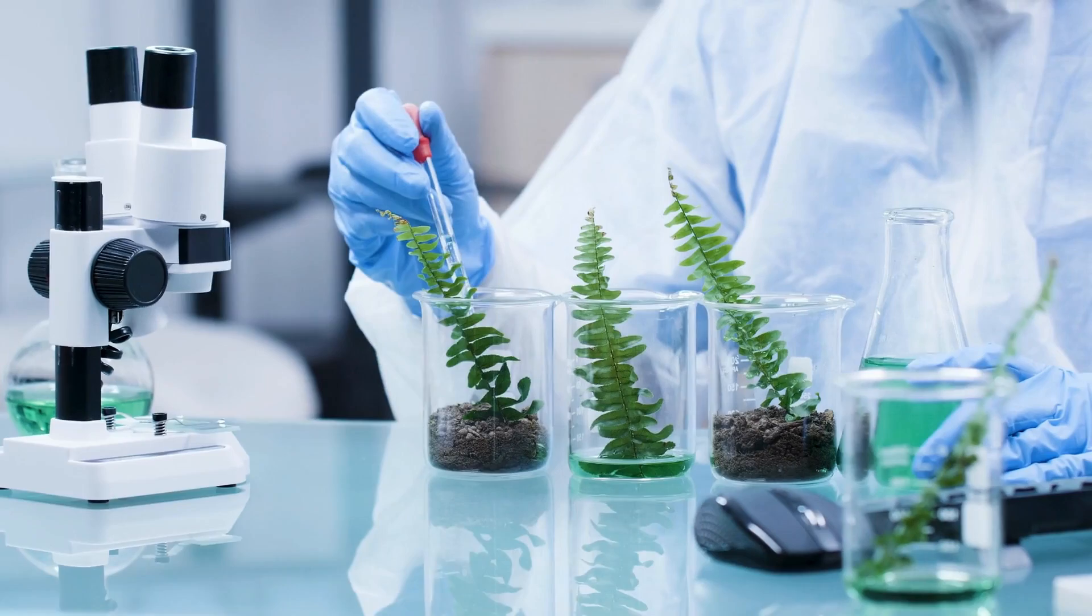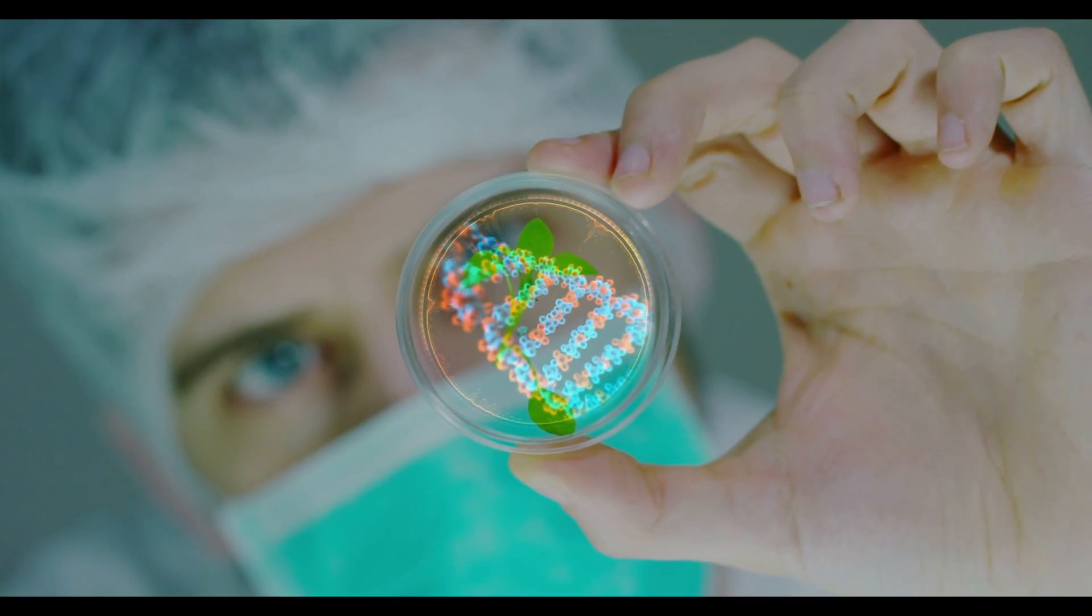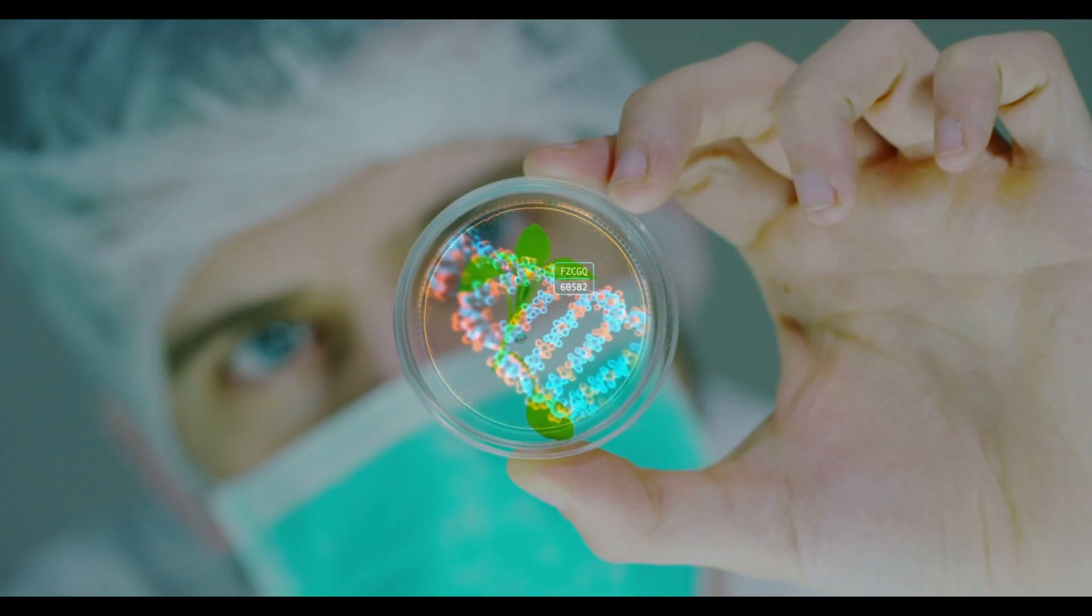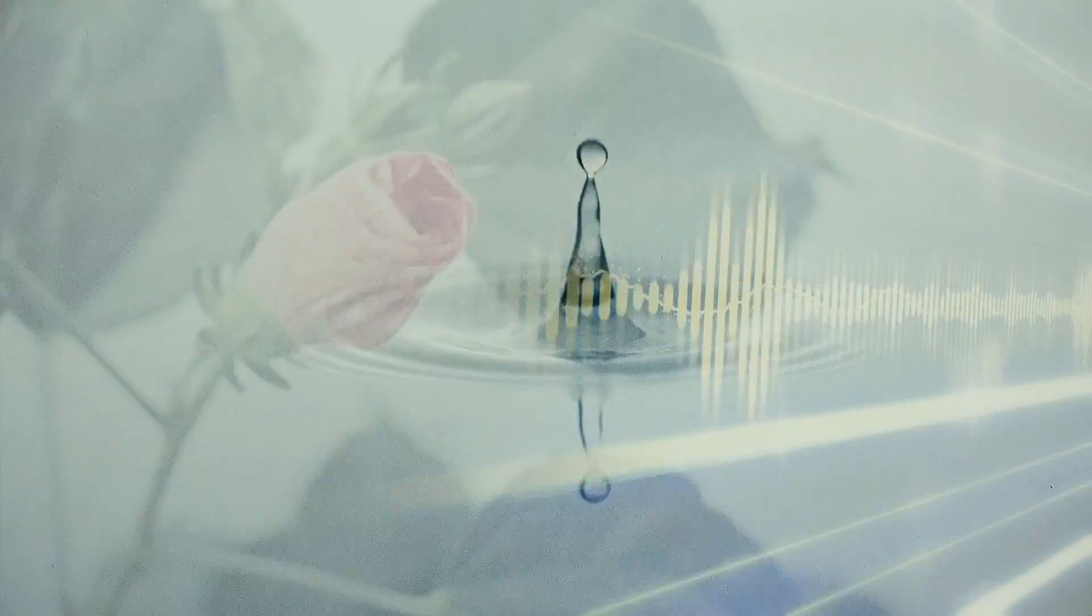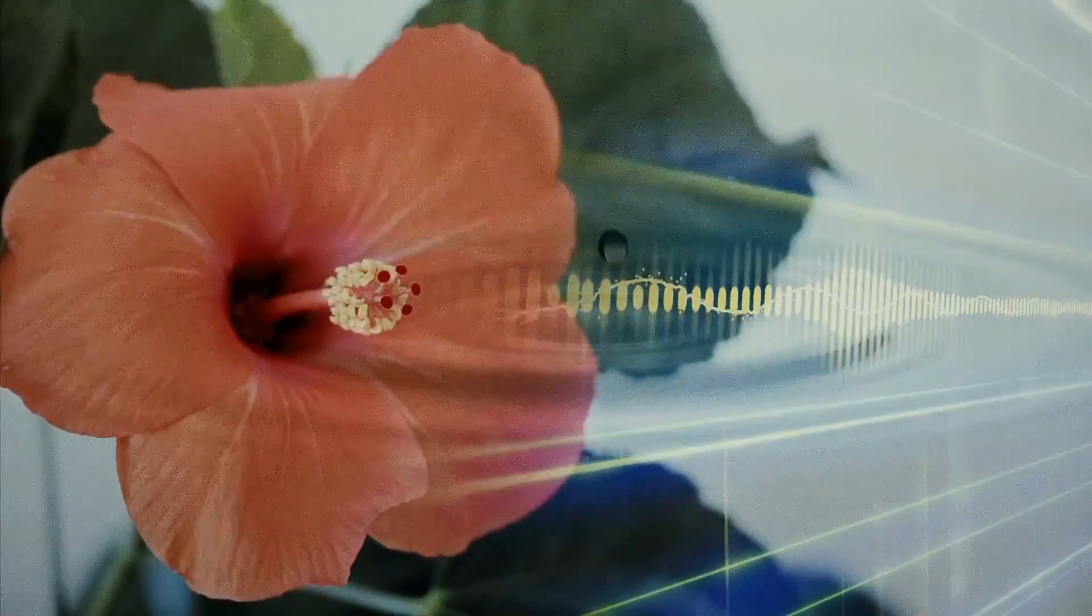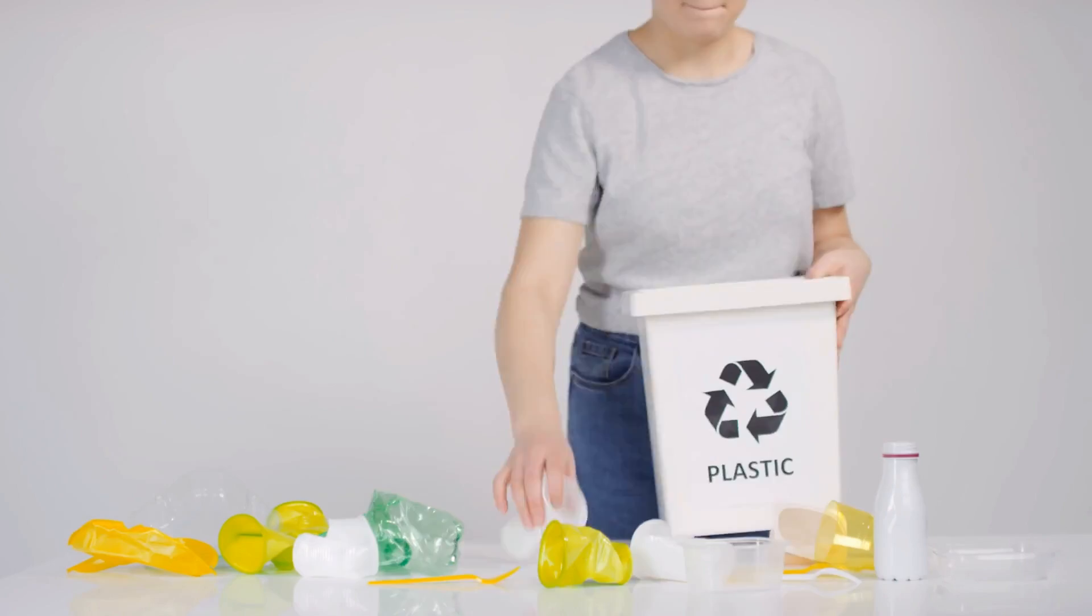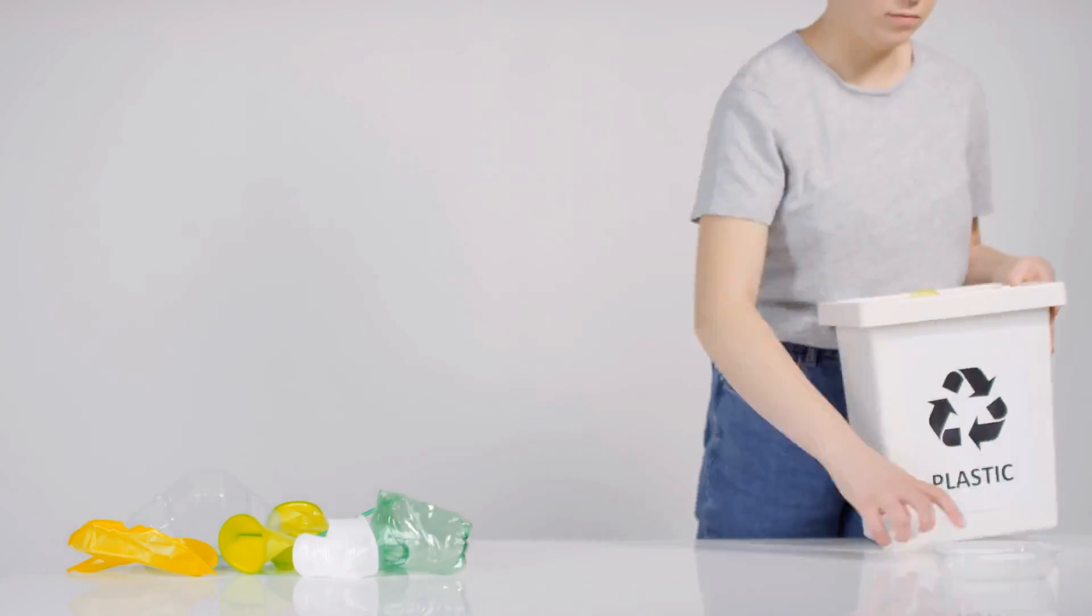By understanding the structures of proteins and other molecules in plants, AlphaFold3 can help scientists create new, more resilient crop varieties. This could lead to plants that not only survive harsh conditions, but also help in producing sustainable materials like biodegradable plastics.